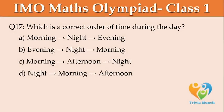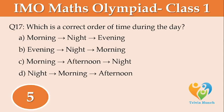Which is the correct order of time during the day? Option A: Morning, Night, Evening. Option B: Evening, Night, Morning. Option C: Morning, Afternoon, Night. Option D: Night, Morning, Afternoon.